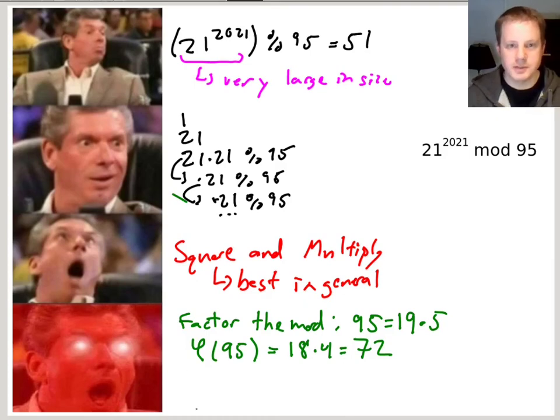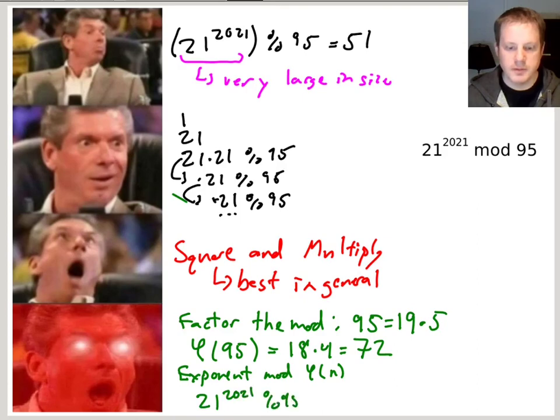So that's why we can't do it in general. But we can take the exponent mod the Totient phi of the modulus. So that means that 21 to the 2021 mod 95 is the same as 21 to the 2021 mod 72. So we take mod phi of n in the exponent, and then there would still be mod 95.